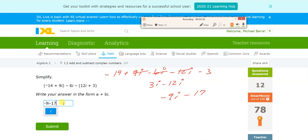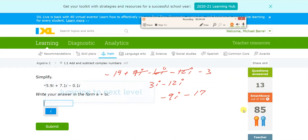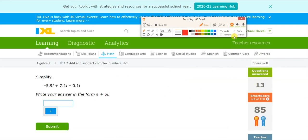9i minus 13. And let's jump a level - see if it gets more complex. Decimals - not a big deal. So negative - I'm using a calculator now - negative 5.9 plus 7.9 plus 7.1 minus 0.1. I've got that as 1.1i.